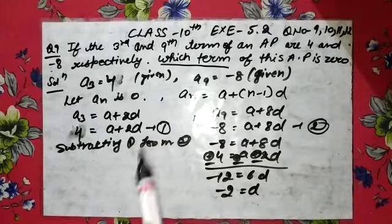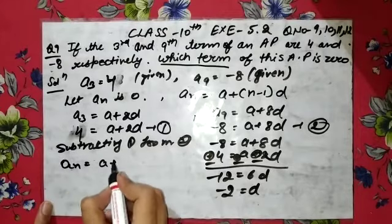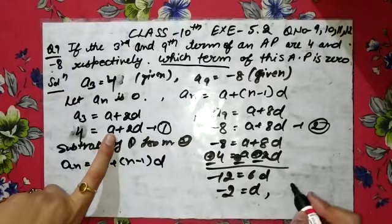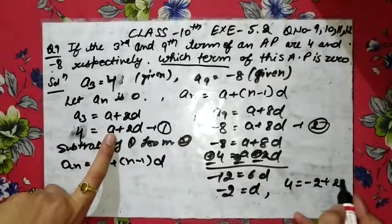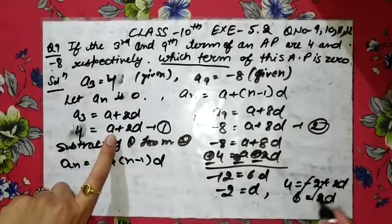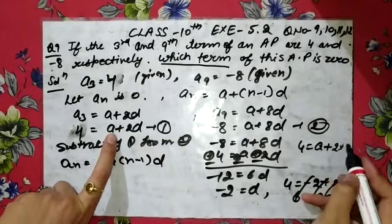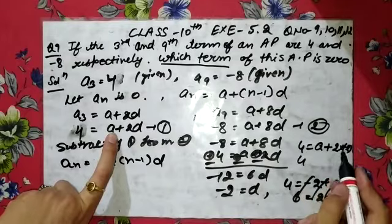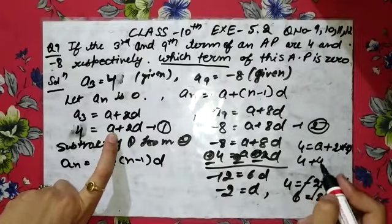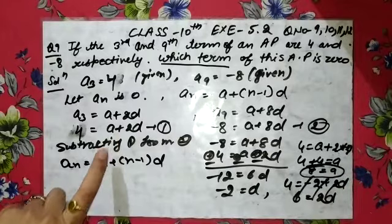Now put d = minus 2 into the first equation to find a. We have 4 = a + 2×(minus 2), so 4 = a minus 4, which gives a = 8.